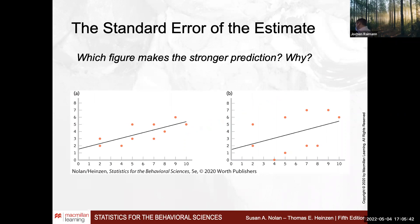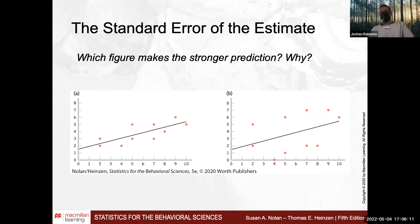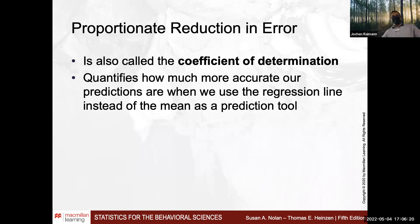We have differences in the predictive accuracy of two different data sets. Looking at which figure — left or right — makes a stronger, more accurate prediction: given the scatter and variability on the right side, it becomes obvious that the left side has smaller variability and greater accuracy. Not everything is easily predicted, and for this reason there is a marker of predictive accuracy.